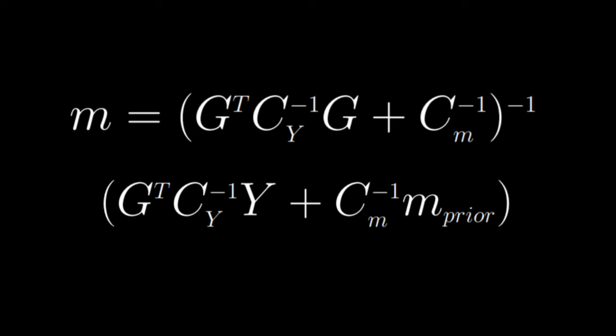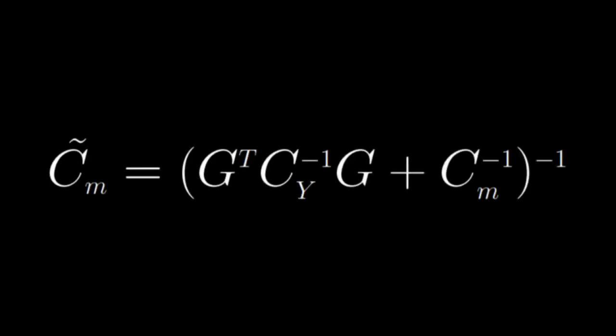After we've run the inversion we have a new mean for the model parameters M that we've estimated, but we also have a new variance and this we can kind of call a C tilde M. So it's the a posteriori covariance of the model parameters. So we had some prior belief of what the variance of these parameters were, and then afterwards some of them may have been better resolved, so actually the diagonals and the off diagonal elements of this covariance matrix can change and can give us a lot of very valuable information about how we should trust those estimated model parameters.